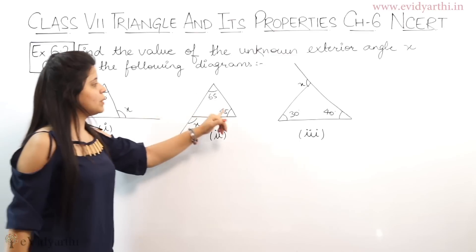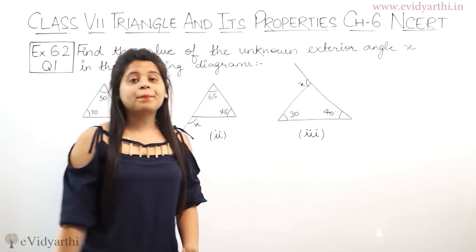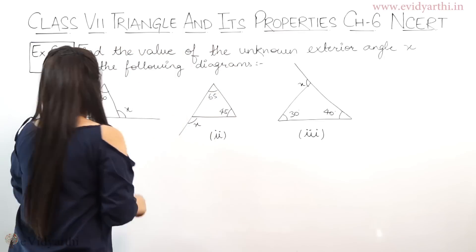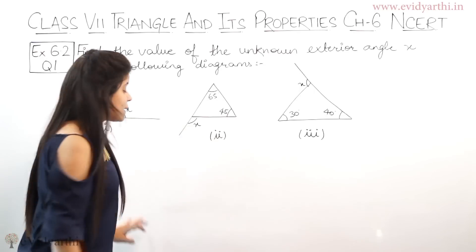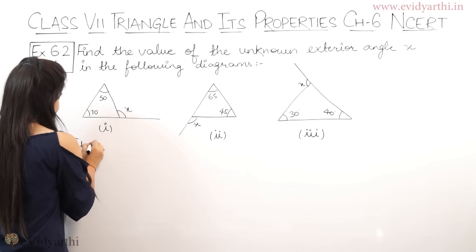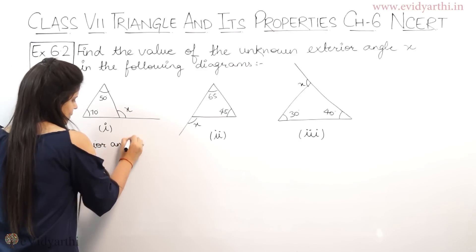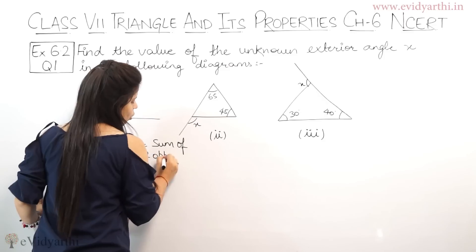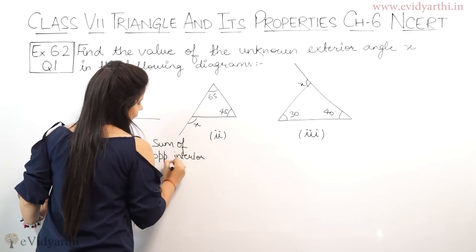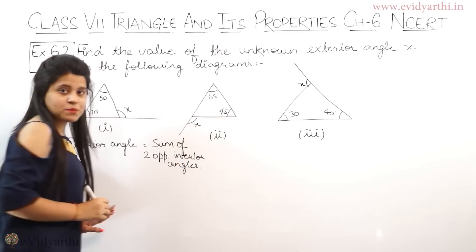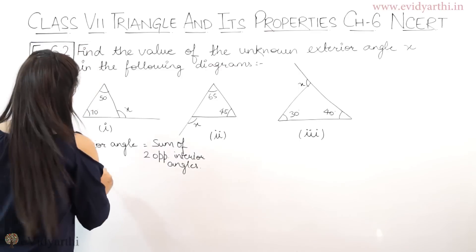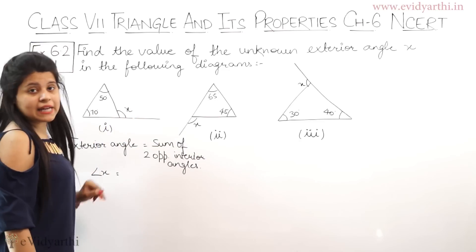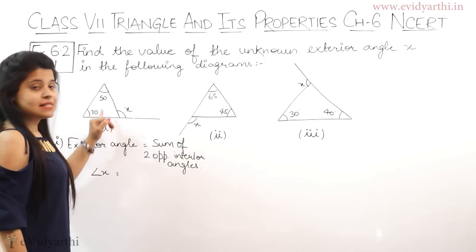Here you have property used which we have already understood. What is the property? Exterior angle X is equal to sum of 2 opposite interior angles. This is the property. Here you have to find angle X. Angle X is equal to sum of 2 opposite angles. This one and this one. Here you have sum.